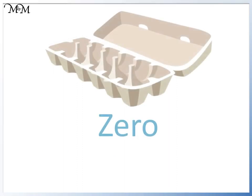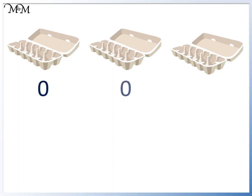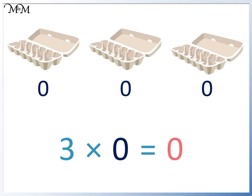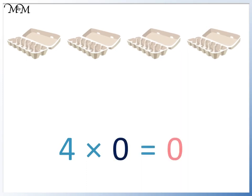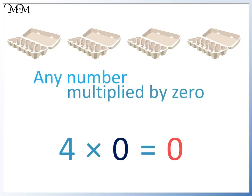Here is an empty box containing 0 eggs. We can take 3 of these boxes. We have 0, 0 and 0. We have 1, 2, 3 lots of 0. There are no eggs in these 3 boxes. When we multiply by 0, we get an answer of 0. Even if we add another box, we have 1, 2, 3, 4 lots of 0, which equals 0. 4 times 0 equals 0. Any number multiplied by 0 always equals 0.